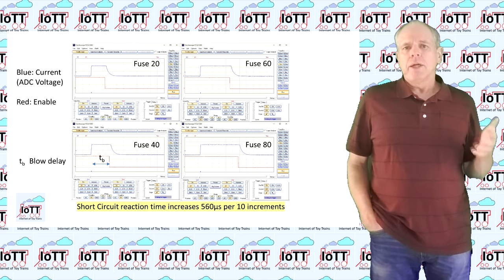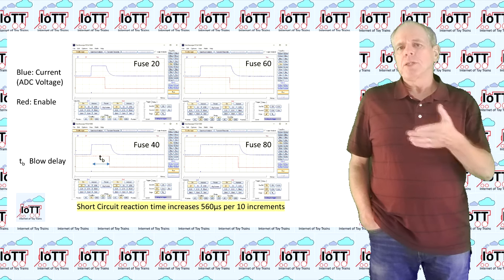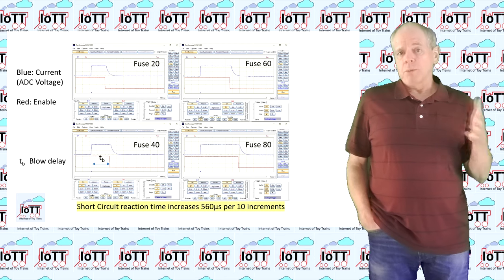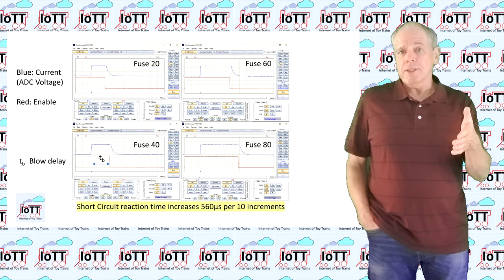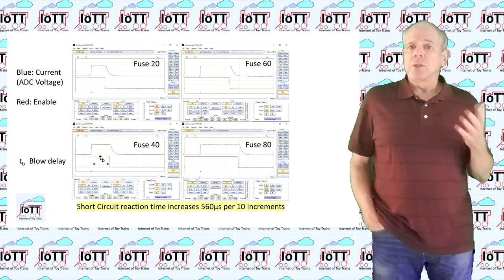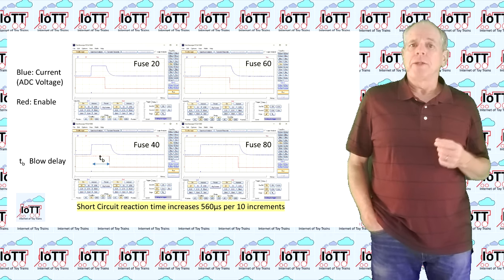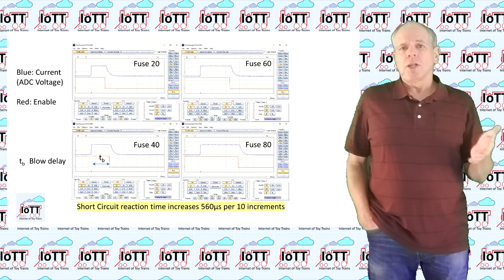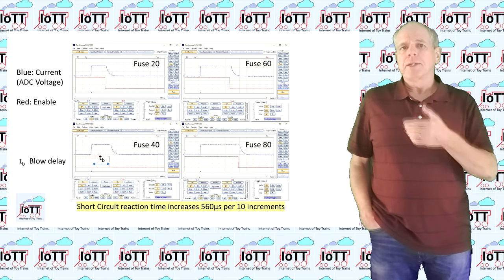The red line shows the power signal that controls the booster. When it turns low, the booster is switched off and the short circuit current disappears. The time it takes from the moment the short circuit occurs until the booster is shut down is programmable with a user setting called fuse value. Each 10 increments of the value give an additional shutdown delay of 560 microseconds.